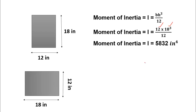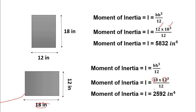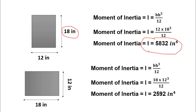If we orient the same beam with height 12 inches and width 18 inches, the moment of inertia will be equal to 18 multiplied by 12 cubed, divided by 12. Here, 18 is the width and 12 is the height. After doing simple calculation, moment of inertia is 2592 inch⁴. You can see that for the same beam, having a larger value of depth gives more moment of inertia than having a larger value of width.